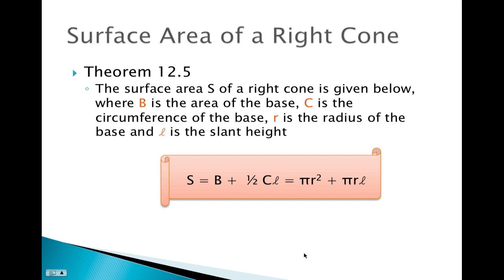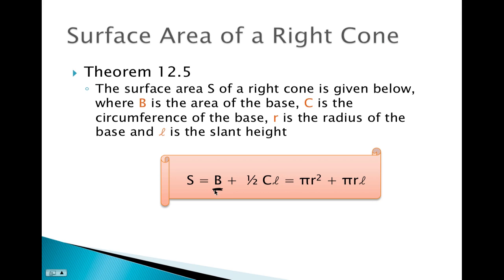The surface area of a right cone equals the base area plus one-half times the circumference of the circle times the slant height. We can rewrite this as: S equals π r squared (area of the circle) plus one-half times 2πr (the circumference), which simplifies to π r squared plus π r times the slant height ℓ.